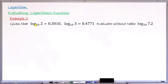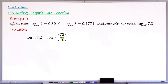Example 2: given that log base 10 of 2 equals 0.3010 and log base 10 of 3 equals 0.4771, find the value without using the table of log base 10 of 7.2. Since we have a decimal, we first convert it to a fraction: 7.2 equals 72 over 10. Applying Law 2, we get log base 10 of 72 minus log base 10 of 10. Since log of 72 is not given, we must split it.